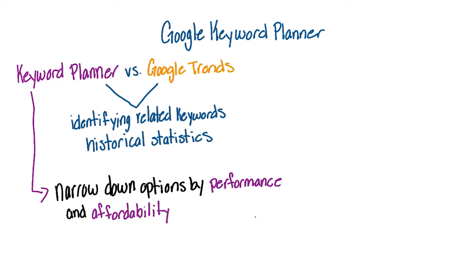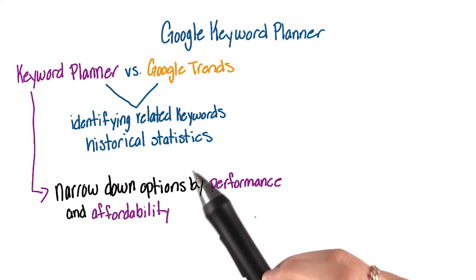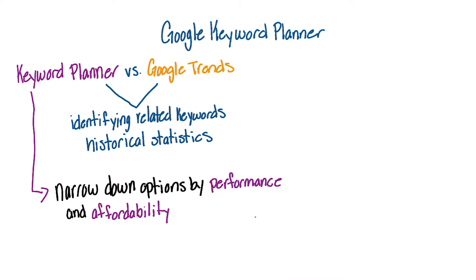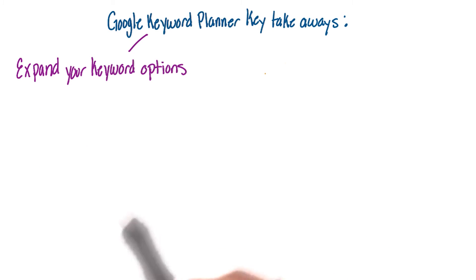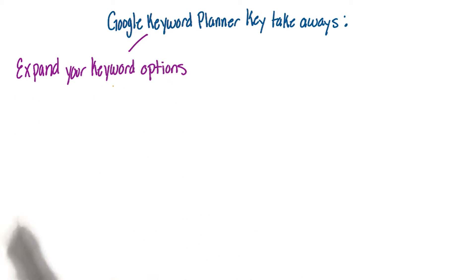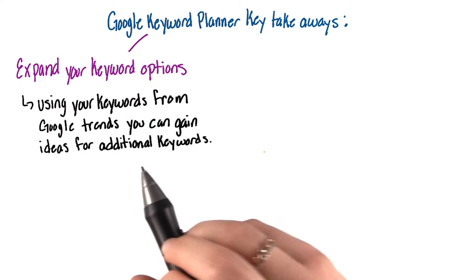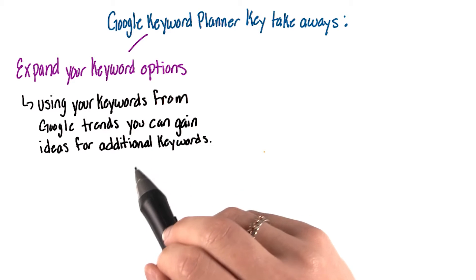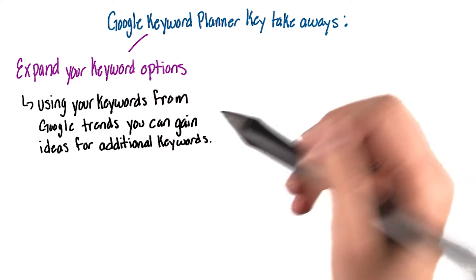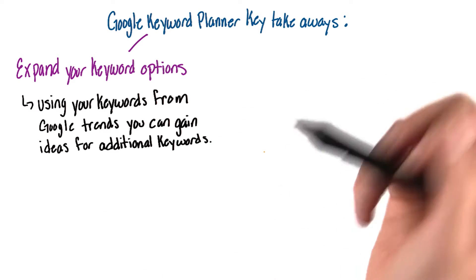This will help us make our plan more realistic and will support our decision about keywords and budget when we build our AdWords campaign. The biggest takeaway for Keyword Planner is first, expanding your keyword options. Based on your first set of keywords from Google Trends, you can get ideas for more relevant keywords and hopefully ones you actually haven't thought of before.